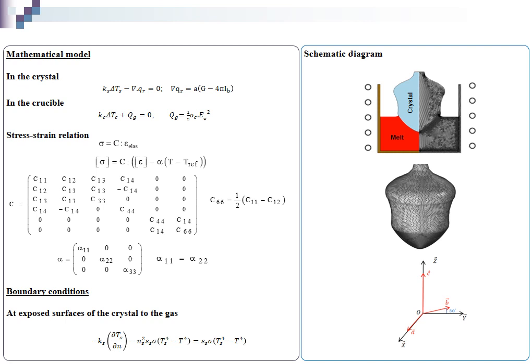taking into account all modes of heat transfer: convection in the melt and the gas, internal radiation in semi-transparent crystal, external radiation between exposed surfaces to gas, and conduction in all elements of the furnace.